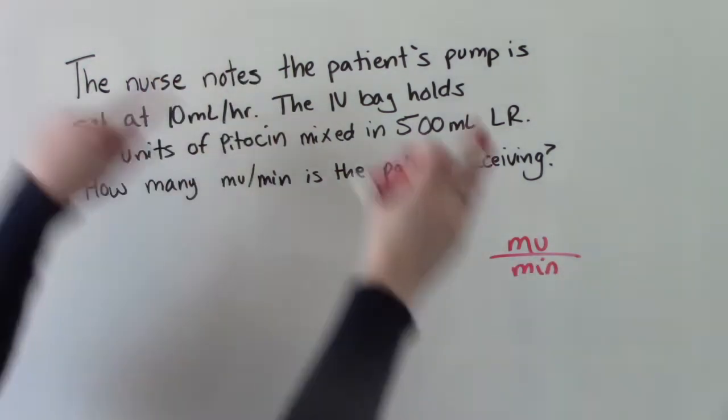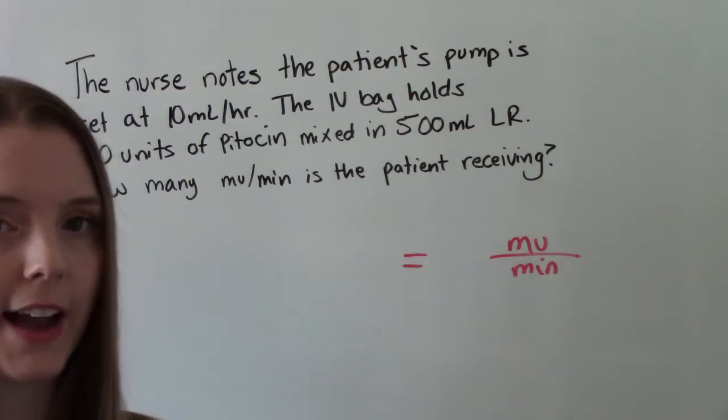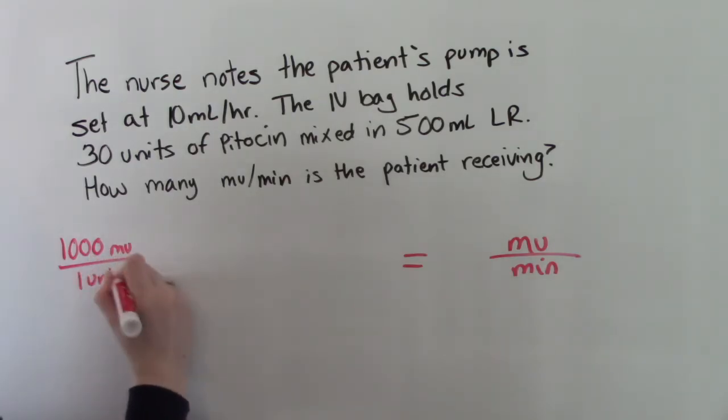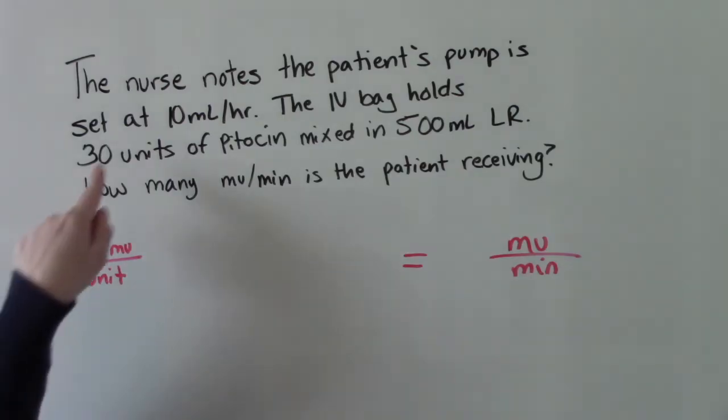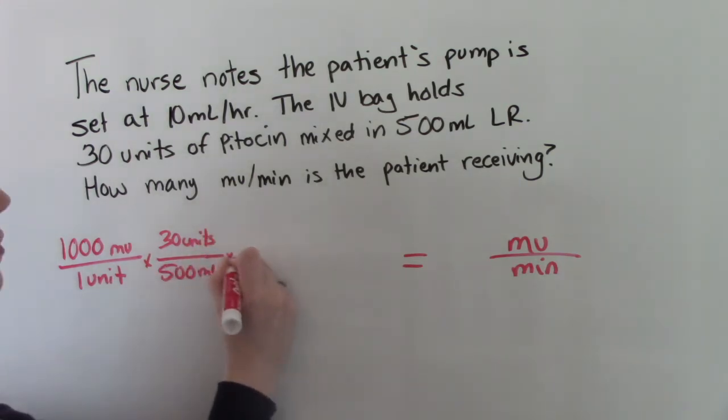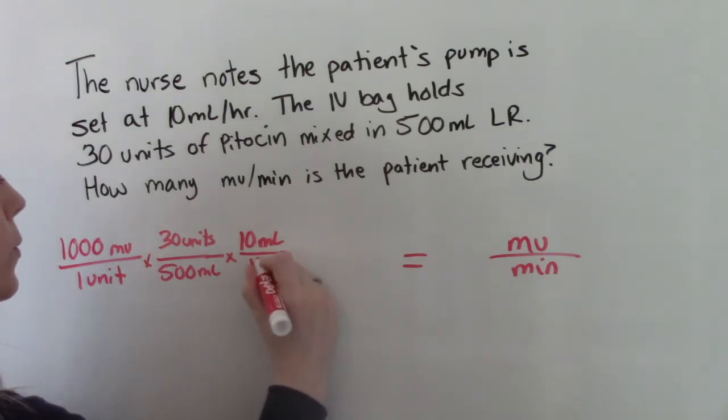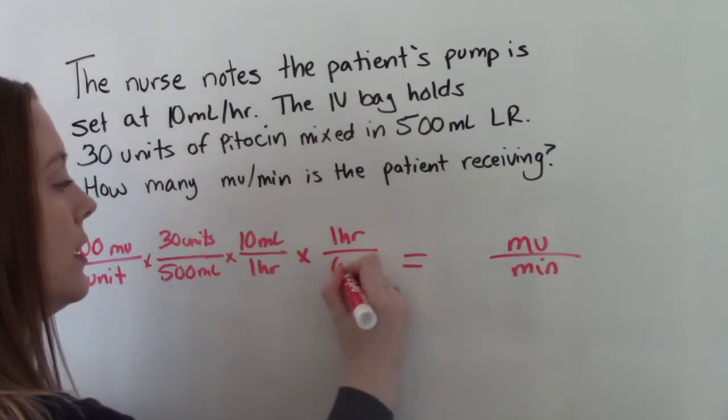So we're going to put it here. And now we need to figure this out. So first things first, where do we see milli units in the problem? We don't. So we know we're going to need to use the converting factor. So that's what we'll start with. So 1,000 milli units is 1 unit. Now we can start plugging things in from the actual problem. So we know there are 30 units in 500 mLs. So 30 units over 500 mLs. What else do we know? We know there's 10 mLs per hour. So 10 mLs over 1 hour. And then the last thing we need to do is we're looking for minutes. So we need to convert hours to minutes. So we know 1 hour is 60 minutes.